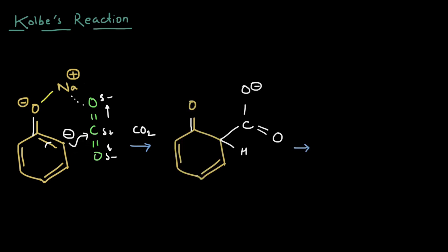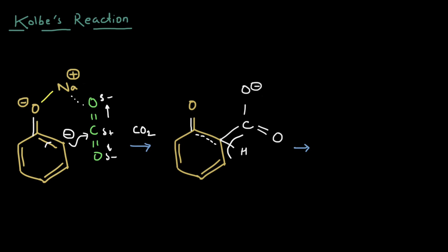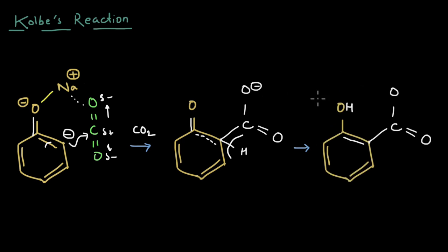After the CO2 attaches at the ortho carbon, something drastic happens: the aromaticity of the ring has broken. To quickly restore the stability of aromaticity, the hydrogen at that carbon is thrown out and the double bond is completed. The H leaves, the CO2 is now attached, and the double bond reforms, restoring the aromaticity of the ring.